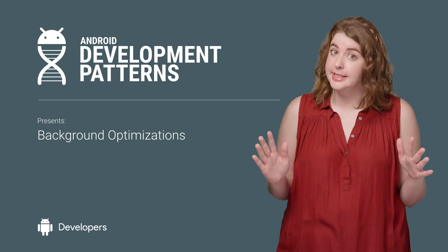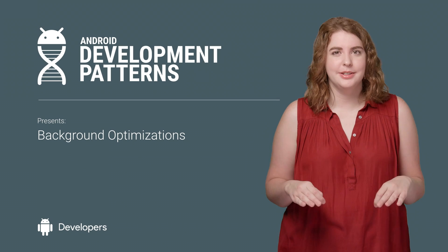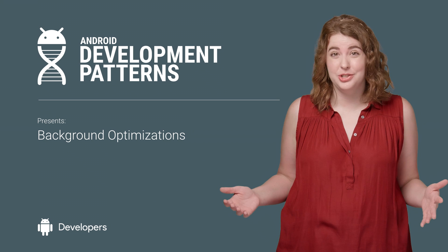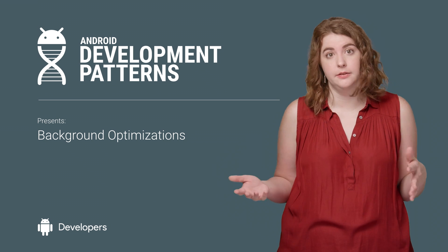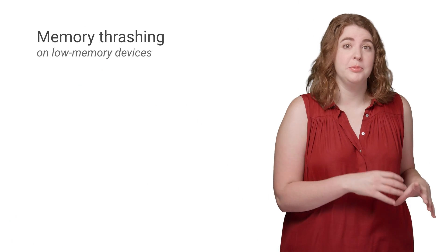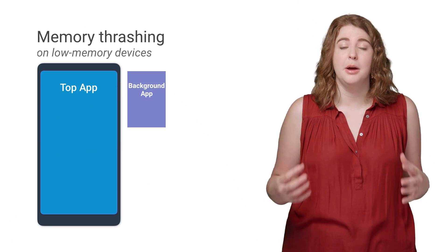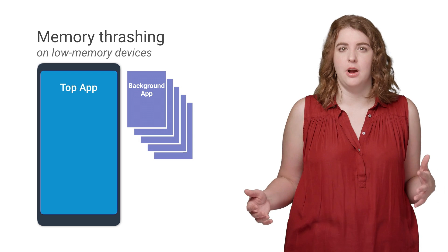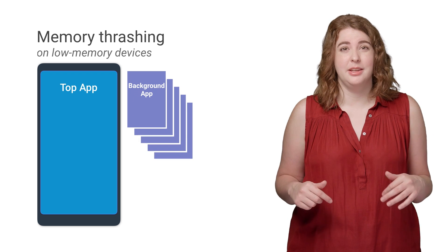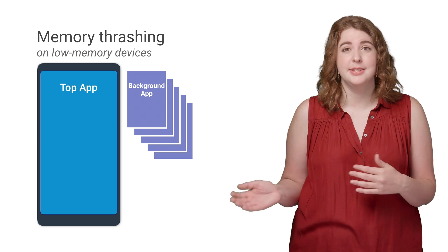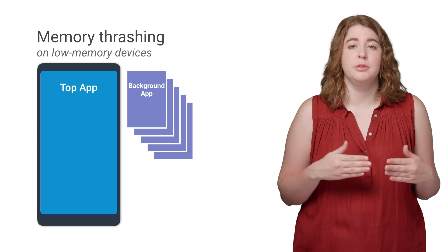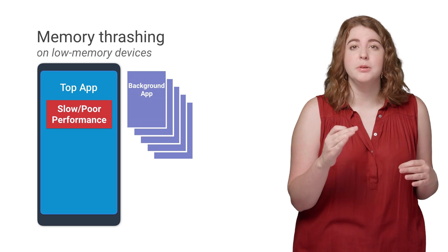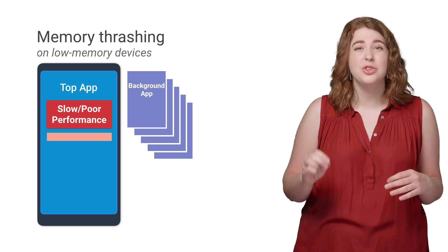Modern Android devices have, potentially, lots of apps with background services, and this is exactly as it should be. But it can be problematic when each of those services just runs willy-nilly all over the user's processor. What we see happening on devices in a low memory situation is that there's often a number of background services running, but there isn't enough memory for all of them. And when this happens, the operating system must swap a lot of processes in and out of RAM, known as memory thrashing. And this reduces the overall system performance, which manifests as poor performance for the app the user is actually trying to use.